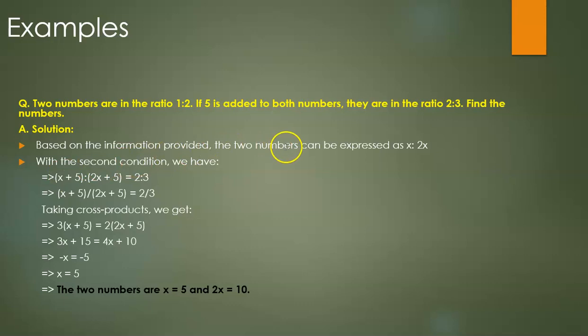If we look at the second condition, then we have another equation that we can form, which is (x+5)/(2x+5) = 2/3. This is because they've told us that if 5 is added to both numbers, the ratio becomes 2:3. So we write it down in division notation, and it becomes (x+5)/(2x+5) = 2/3.